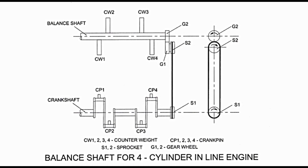Sprocket S1 is mounted on the crankshaft, and sprocket S2 is mounted on a shaft. Sprocket S2 is integrated with gear wheel G1 on the left. Gear wheel G1 meshes with gear wheel G2 mounted on the balance shaft. Another view on the right shows details of the chain drive and gear wheels. The crankshaft rotates in the clockwise direction, and so does sprocket S1. The motion is transferred to sprocket S2. Sprocket S2 and gear wheel G1 rotate in the clockwise direction, and the rotary motion is transferred to gear wheel G2. G2 rotates in the anticlockwise direction; therefore, the balance shaft also rotates in the anticlockwise direction.